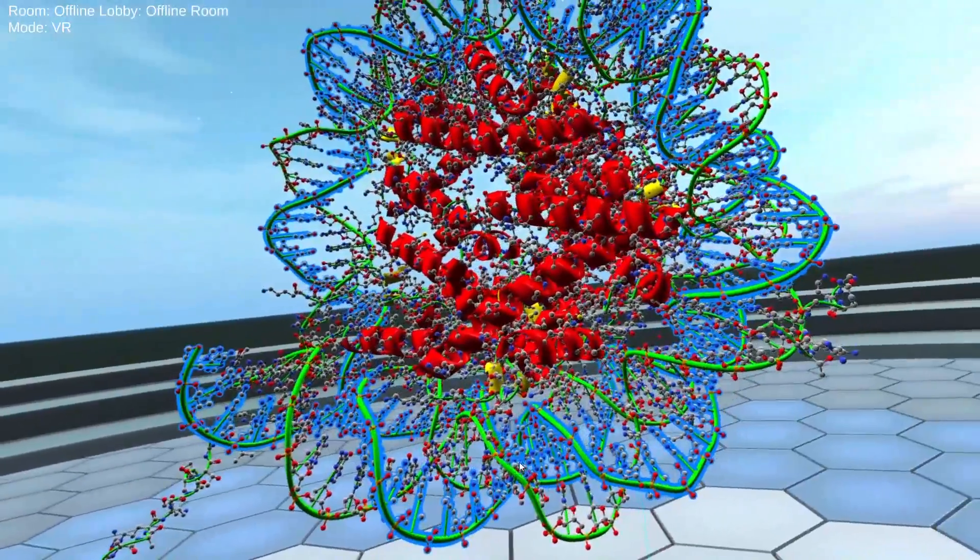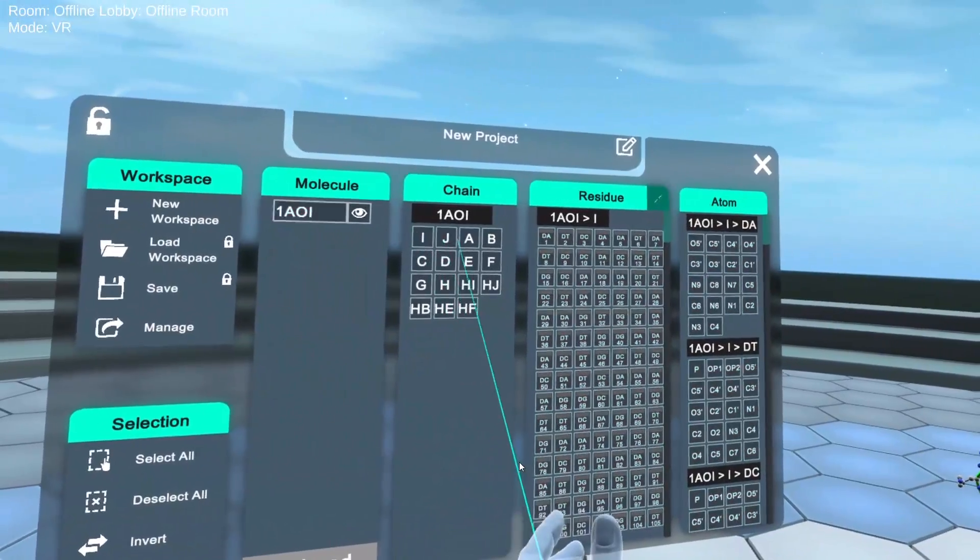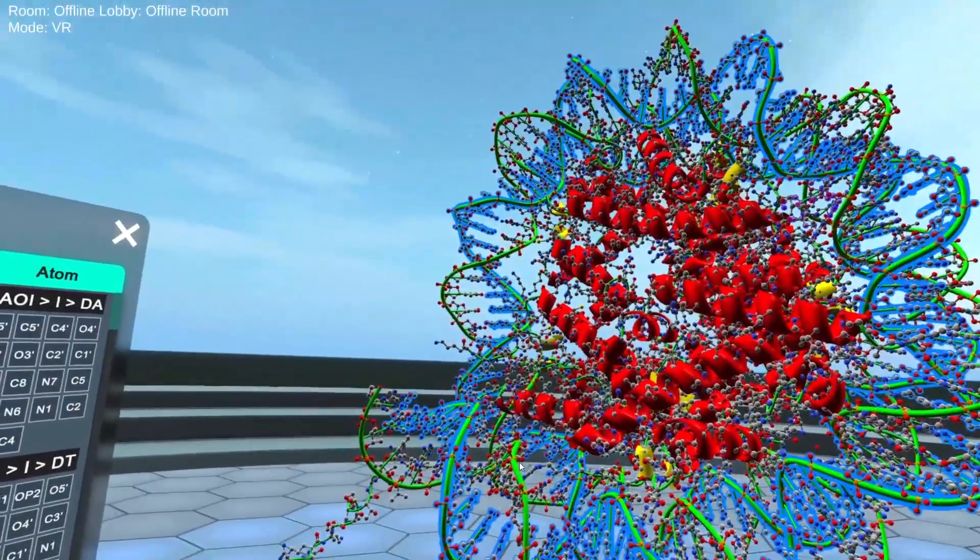So I and J here are going to be our two complementary DNA strands. So there's one and then there's the other.